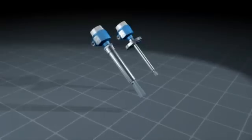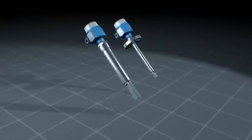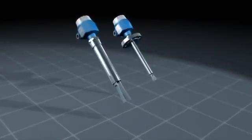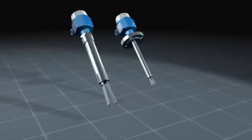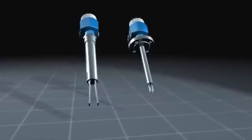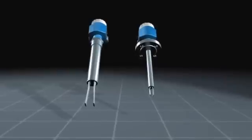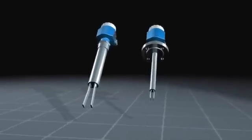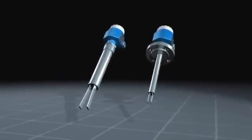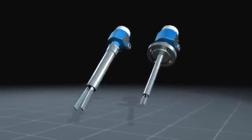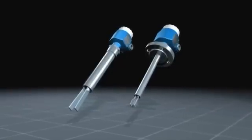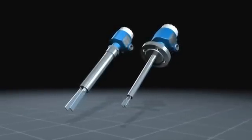The vibronic measuring principle of Endress+Hauser enables point level detection unaffected by the physical properties of the medium. For example, conductivity, dielectric constant, density changes, pressure, or temperature. Turbulences, the formation of foam, or bubbling liquids do not impair the point level detection either.